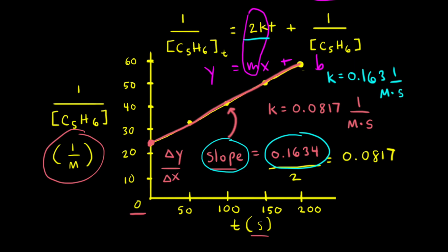However, since the coefficient in front of cyclopentadiene is a 2, technically 0.0817 inverse molar times seconds is the correct rate constant. Finally, since we got a straight line when we graphed 1 over the concentration of cyclopentadiene versus time, we know that this reaction has second order kinetics.